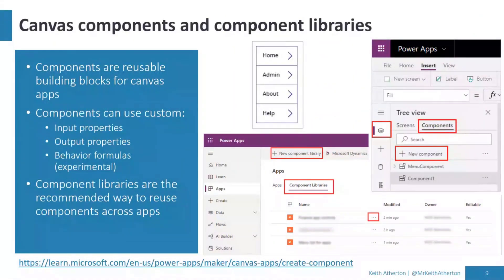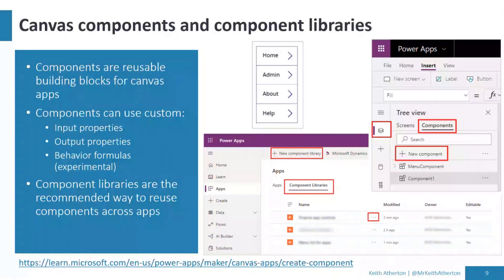When many of us think of reusability, canvas components are very popular. For example, a menu system with home, admin, and so on — if that was something we wanted on multiple screens, a component is a very good option. If we change that component, it's reflected in all instances. You can customize components using input and output properties to send data to or retrieve it from the component. You've also got behavior formulas — experimental — a way of almost raising events like OnSelect. If you take components further and want the same components used across multiple apps, there's also the concept of component libraries to share them across apps.